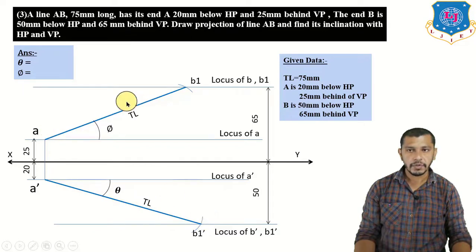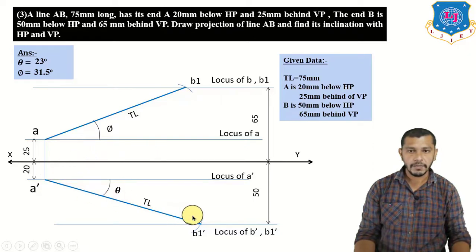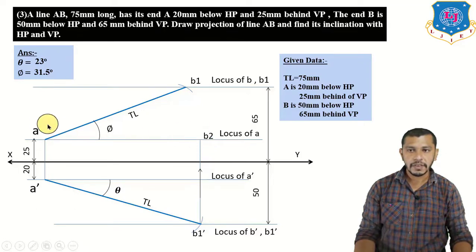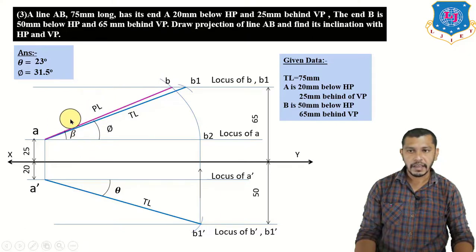After finding theta and phi, find the projection of the line. To find the plan: draw a straight line from b1-dash up to the locus of a to get b2, so ab2 is the plan length. Measure ab2 as arc length with center at a, give an arc up to locus of b to get plan point b. Connect b to a — this is the plan length, and its angle is beta.